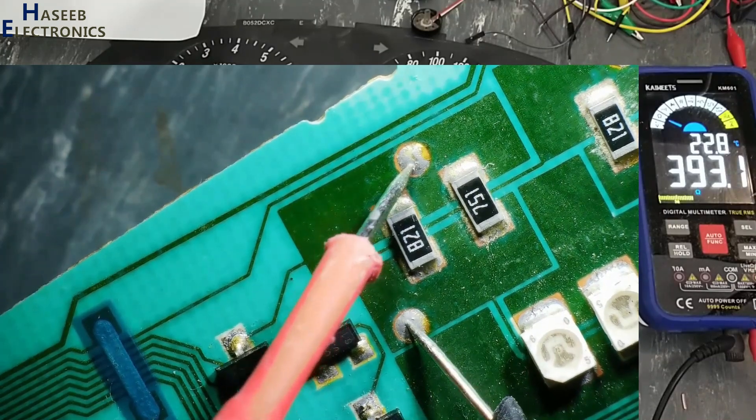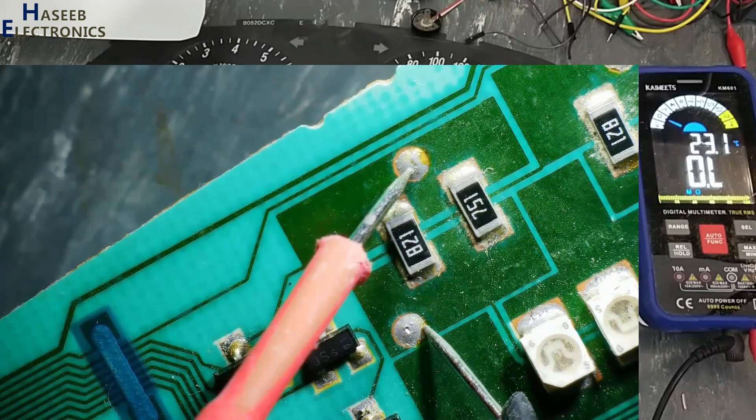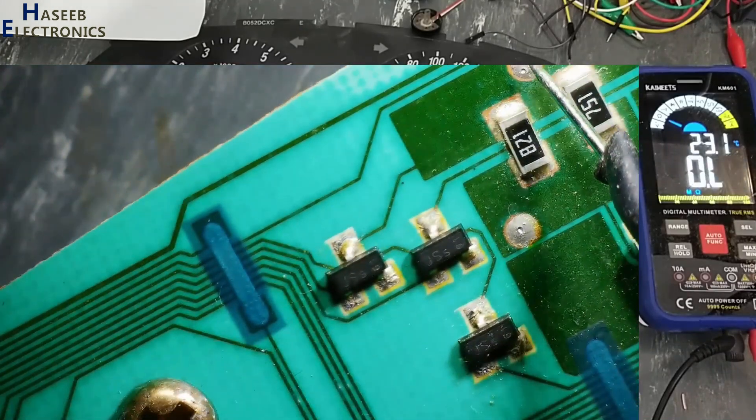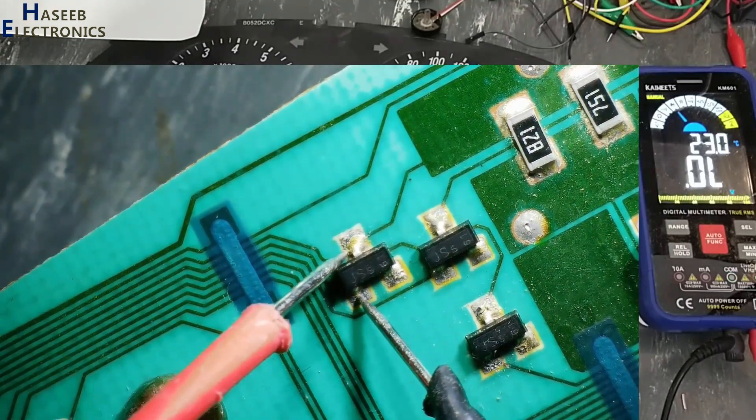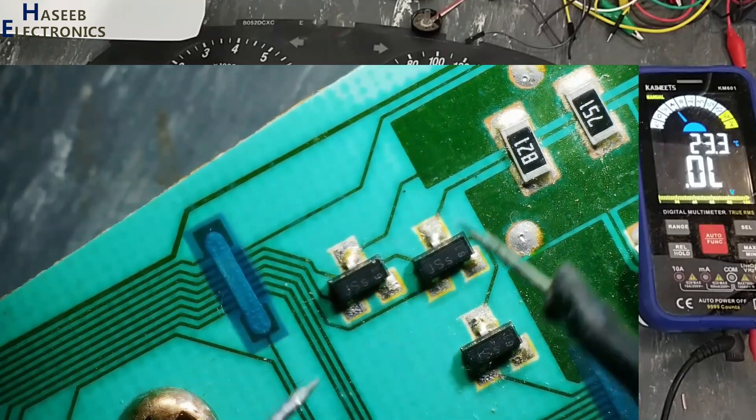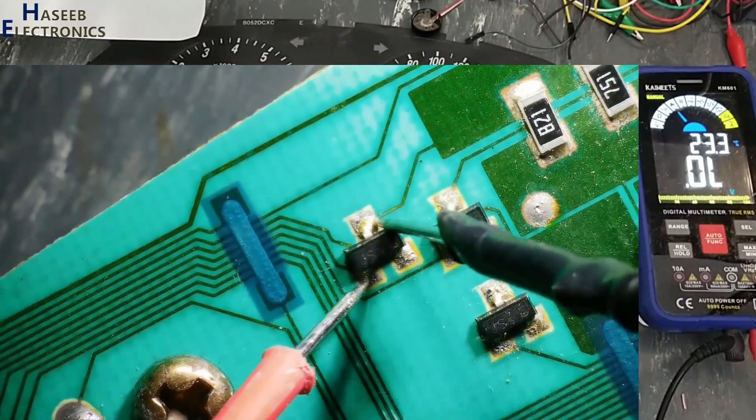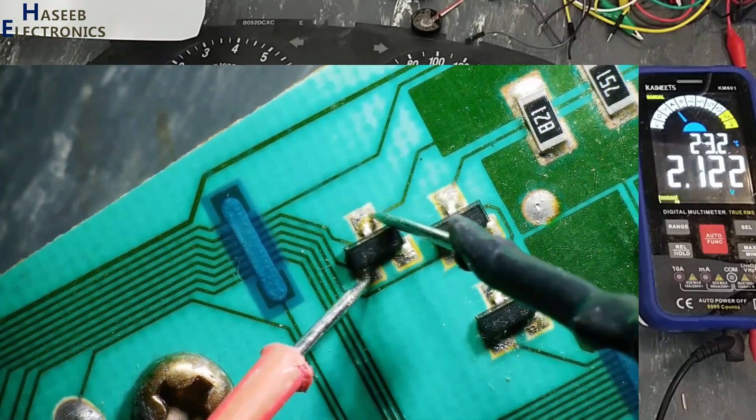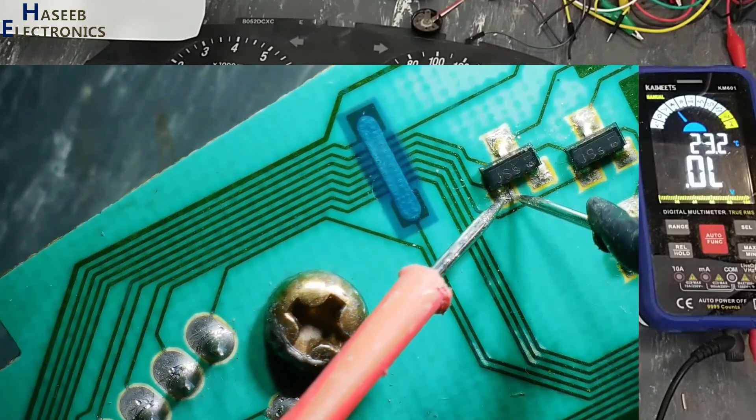Two resistors in parallel, 392 ohms, because 820 and 750 two resistors in parallel. Then it is reaching to this component, J is marked as a diode, one-way conductor. This side anode, this side cathode. When it is anode, that means it is positive line.